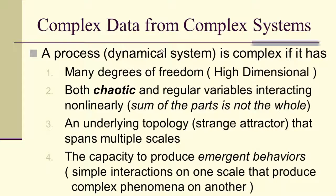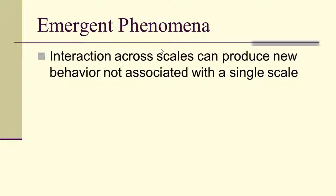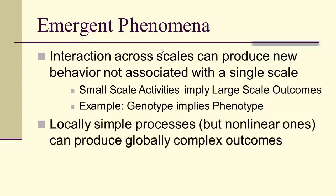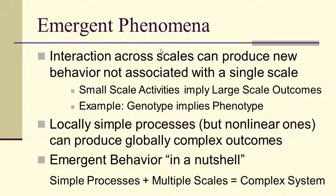So let's go back to complex data from complex systems. We've looked at chaos, and we've looked at many degrees of freedom, chaos. Now we've seen this multiple scale strange attractor behavior. And now let's talk about emergence. Emergence means interaction across scales that can produce new behavior not associated with a single scale. Small scale activities implying large scale outcomes. For example, genotype implying phenotype. A locally simple process has to be a nonlinear one, but it leads to globally complex outcomes. And so, emergent behavior in a nutshell is simple processes plus multiple scales equals complex system.